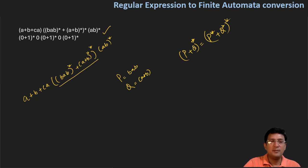After applying the identity, the simplified version becomes (a+b+c) concatenated with (bab+a+b)*, which gives us the components for our finite automata.